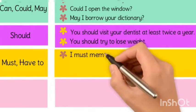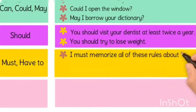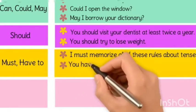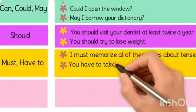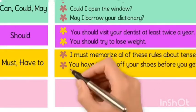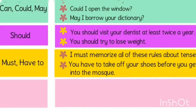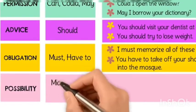First example of must: I must memorize all these rules about tenses. Next example of have-to: You have to take off your shoes before you get into the mosque. These express obligation and duty.